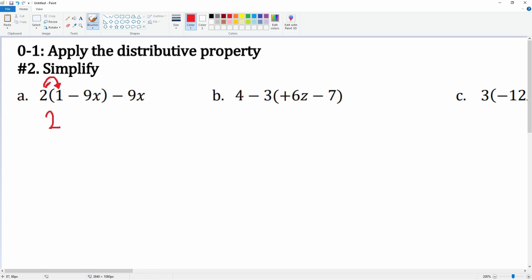Then we have 2 times negative 9x, that gets you negative 18x. Nothing happens to the negative 9x here, so we bring it straight down. We are now looking to combine some like terms. The like terms here